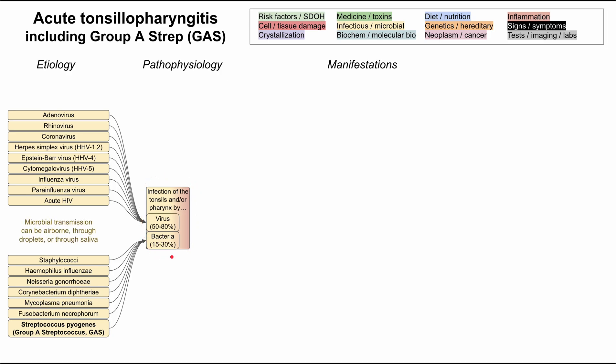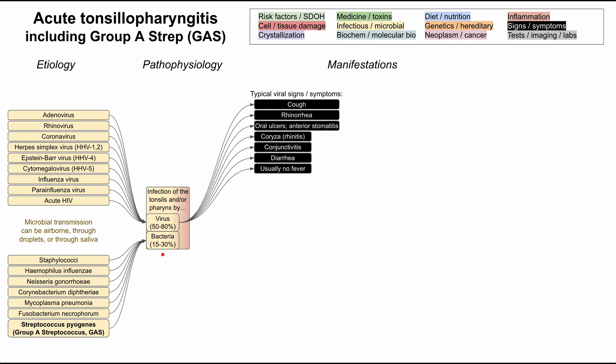These viruses and bacteria can transmit through the air — they can be airborne — and can also be transmitted through droplets and through saliva, so there are many ways to transmit and start one of these infections. The typical signs and symptoms for a viral acute tonsillopharyngitis include cough, rhinorrhea or runny nose, oral ulcers and anterior stomatitis, coryza (which is really just rhinitis — inflammation of the nasal passageways), conjunctivitis giving a pink eye appearance, and other standard viral symptoms like body pains, joint aches, and diarrhea. Usually from a viral infection you do not have a fever.